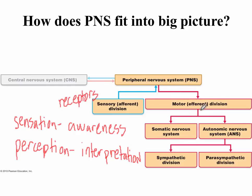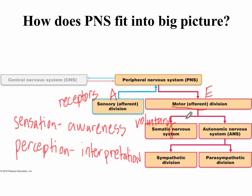Looking at the motor or efferent division — you need to know that motor means the same as efferent with an E, and sensory means afferent with an A. The motor division includes the voluntary nervous system, which controls skeletal muscles. That is the somatic nervous system. There is also an autonomic component — the automatic portion of the peripheral nervous system that we can't control.